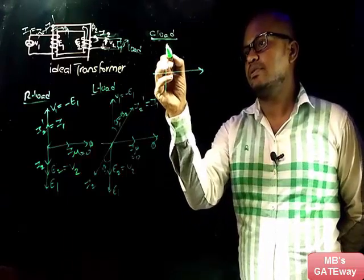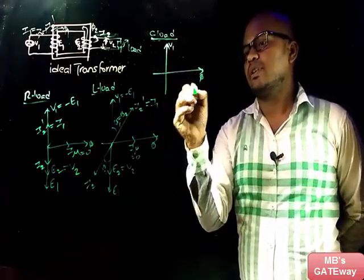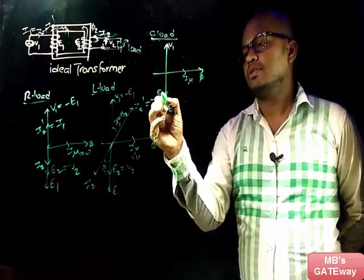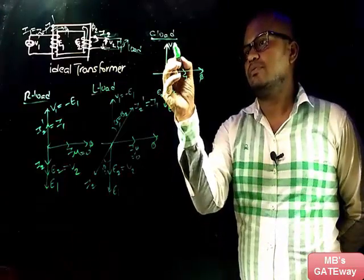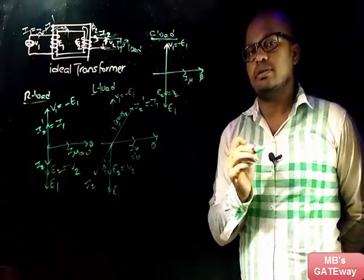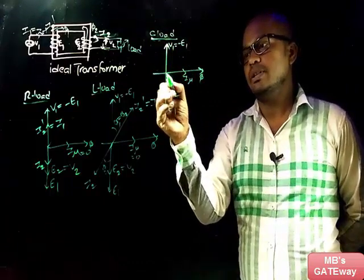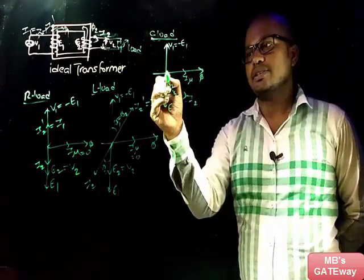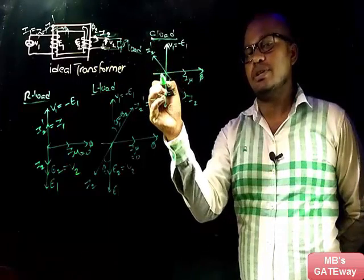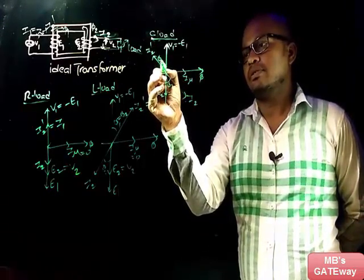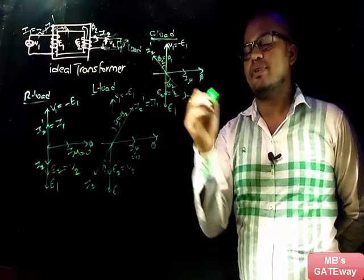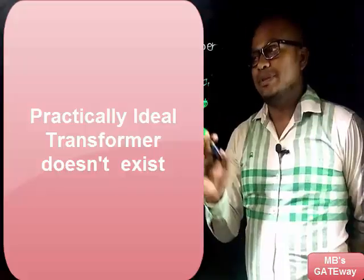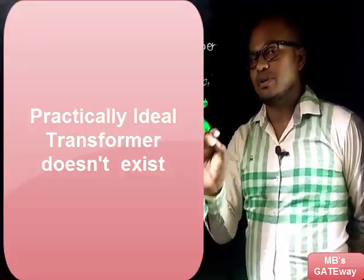Similarly, let's draw the phasor diagram for capacitive load. The common phasors are V1, phi, Iμ, E1, and E2 which equals V2, with V1 equal to minus E1. For capacitive load, current I2 leads V2 by angle phi2. In the exact opposite direction is I2', with phi2 equal to phi1, and I2' equal to I1. Please keep in mind that practically, an ideal transformer does not exist.